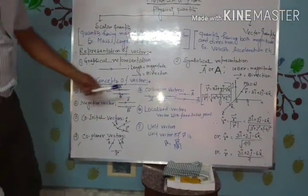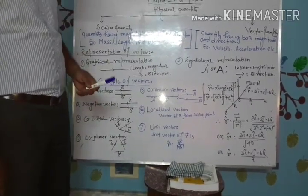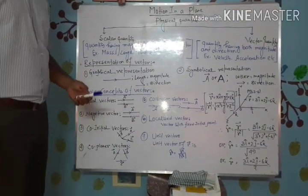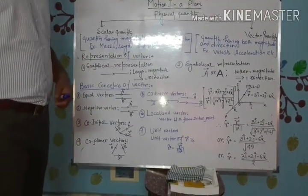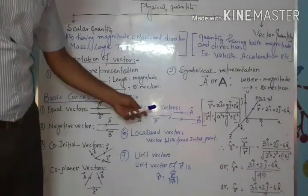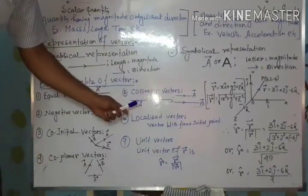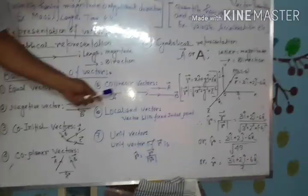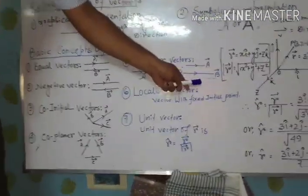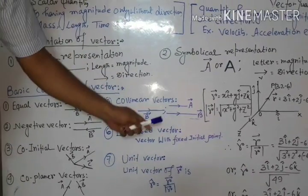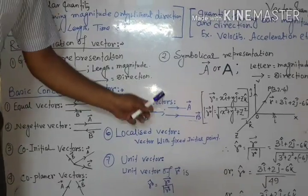Next: Co-Linear Vectors. Whenever vectors of the same or different magnitude lie on the same line or are parallel, then the vectors are said to be Co-Linear Vectors. Here A and B are of different magnitude but lie on the same line. Similarly, here A and B are of different magnitude but lie on parallel lines. So in both diagrams, A and B are Co-Linear Vectors.